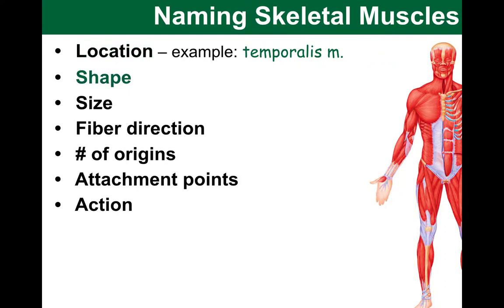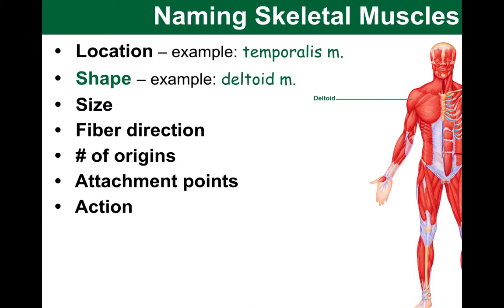Another thing that the name of a muscle can tell us is a cue about its shape. Muscles have distinctive shapes and often the term can describe these. Here we have the deltoid muscle, which is the muscle that wraps around covering the shoulder. The term actually comes from the Greek word 'deltoides,' which means a triangle — and if you look at it, it does have a triangular kind of shape.